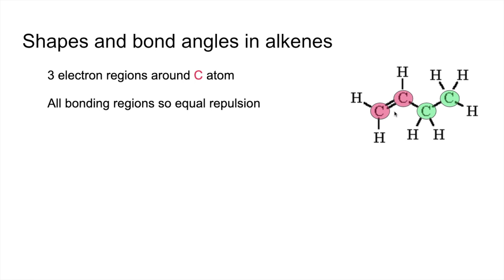These are all bonding regions—there's no lone pairs—so the repulsion is equal. The shape associated with that and the angle is a trigonal planar shape, 120 degree angle.